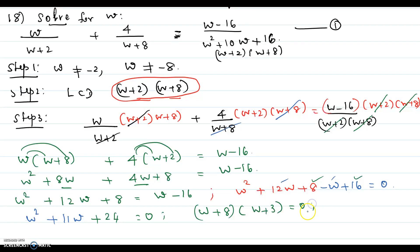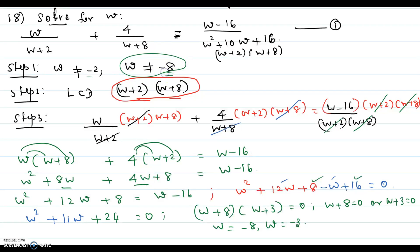Factoring, you get w plus 8 equals 0 or w plus 3 equals 0, so w equals negative 8 or w equals negative 3. But earlier in step 1 we said w cannot equal negative 2 and w cannot equal negative 8. Because w cannot equal negative 8, we have to disregard that solution. The only solution is w equals negative 3. Hope this video helps.